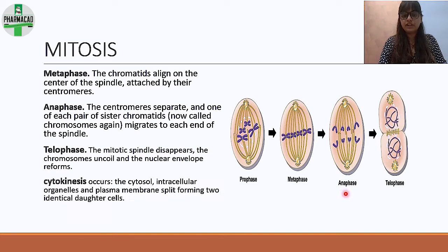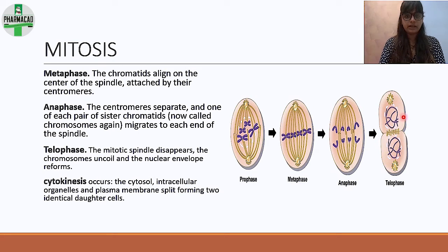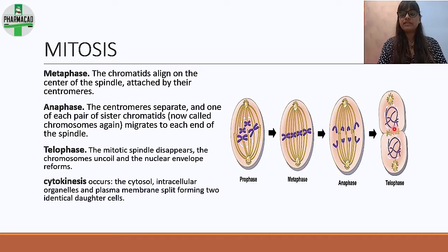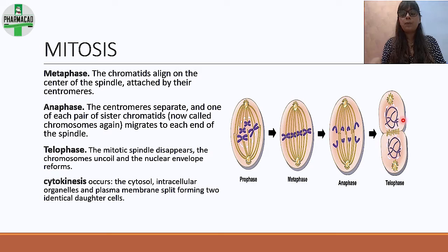In telophase, the mitotic spindle disappears, the chromosomes uncoil, and the nuclear envelope reforms. You can see the chromosomes that were condensed are now uncoiling and the nuclear membrane — shown as a white structure — is developing around them. This covers the division of the nucleus, chromatin, and DNA.